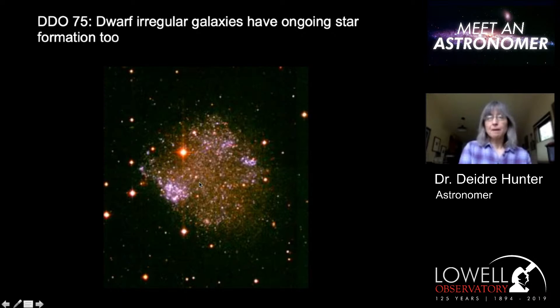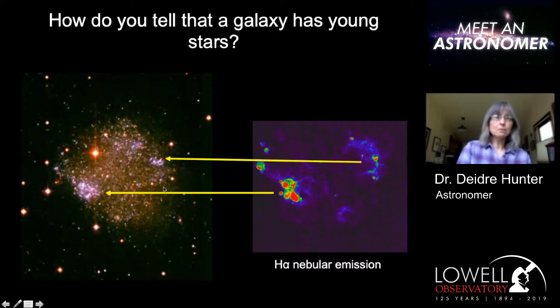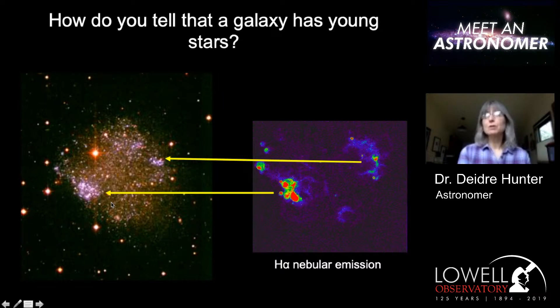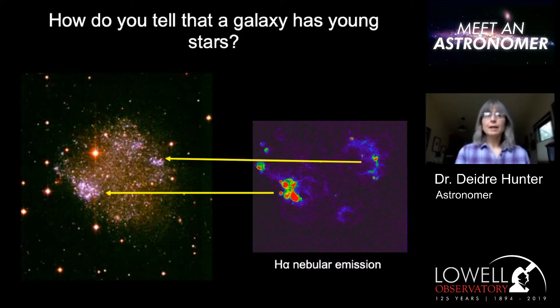So how do we know that there are young stars in galaxies? If we look at this picture of the dwarf galaxy, you see these clumps of blue stars. We know that those are young star clusters. In a star-forming region, you make stars of all different masses, but the massive stars in particular are very hot, very blue, very bright, and they don't live very long. The most massive stars only live a few million years, so if you see them in these star clusters and associations, you know that stars have formed there fairly recently by extragalactic standards.